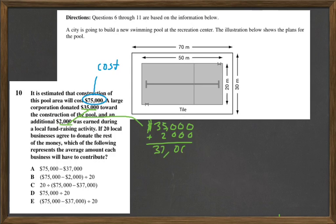So, if 20 local businesses agree to donate the rest of the money, which of the following represents the average amount each business will have to contribute?